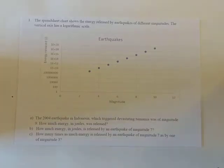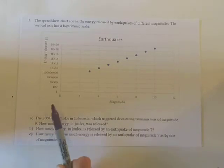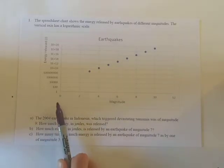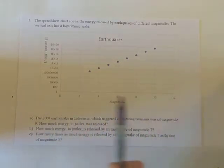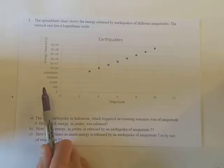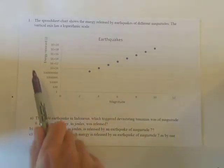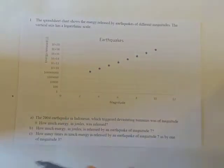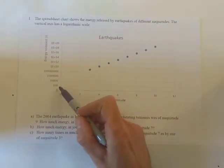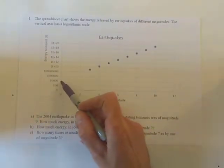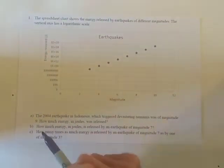In question one, we've got the magnitude of earthquakes on a linear scale and the energy released on a logarithmic scale. We can see the scale is going up by a factor of 100 each step.